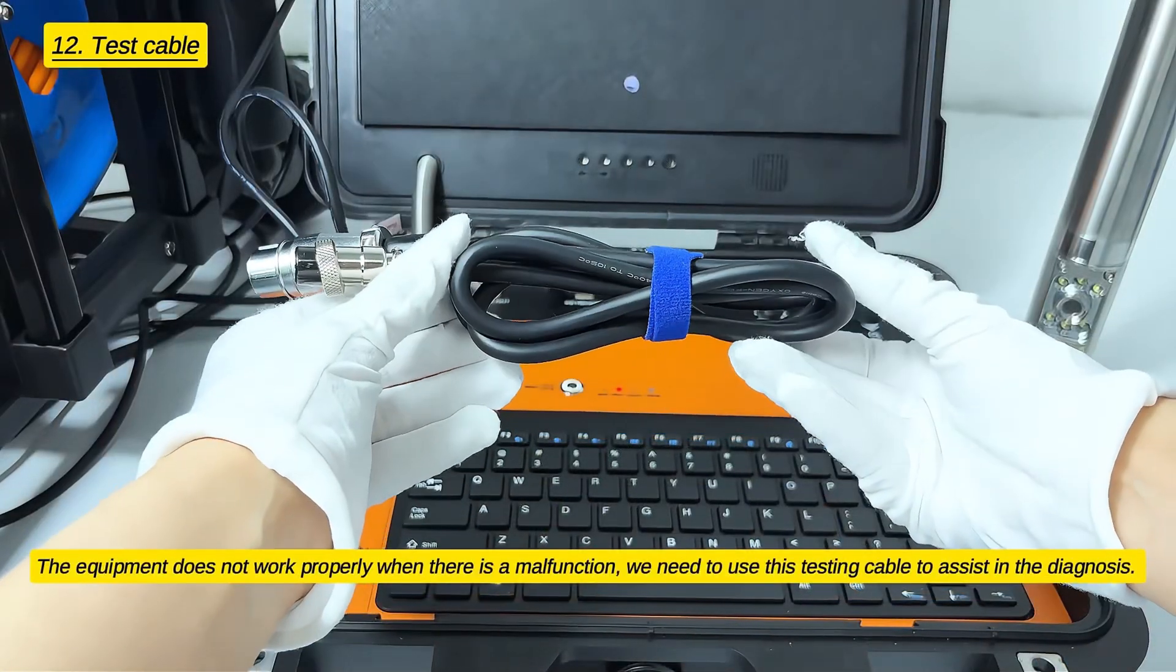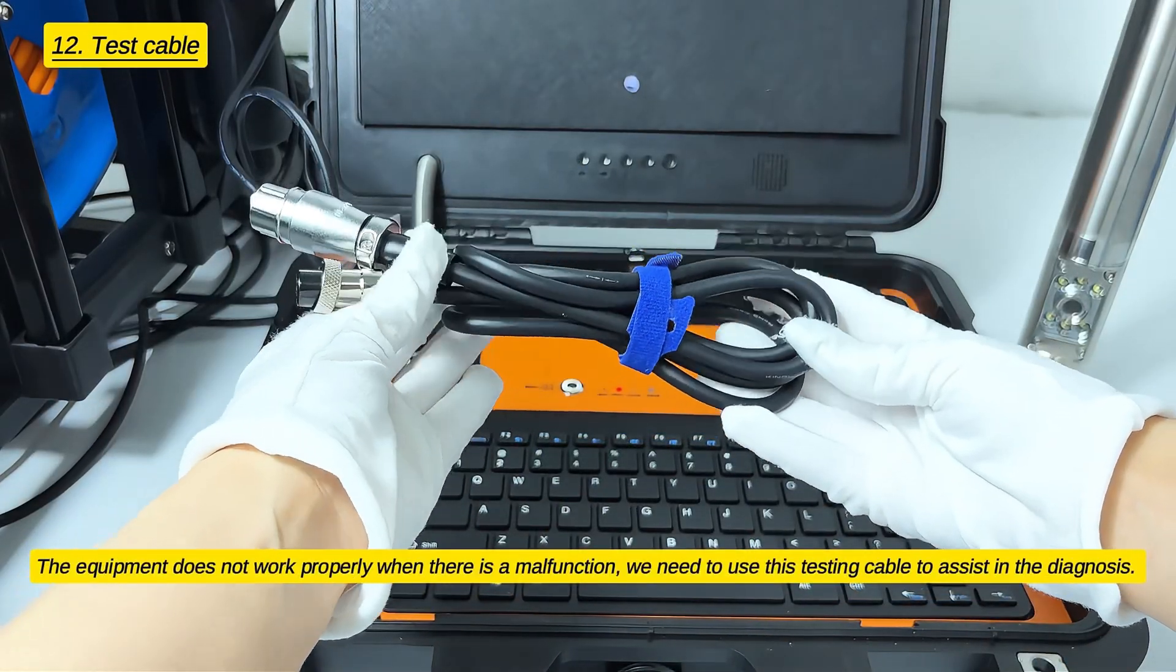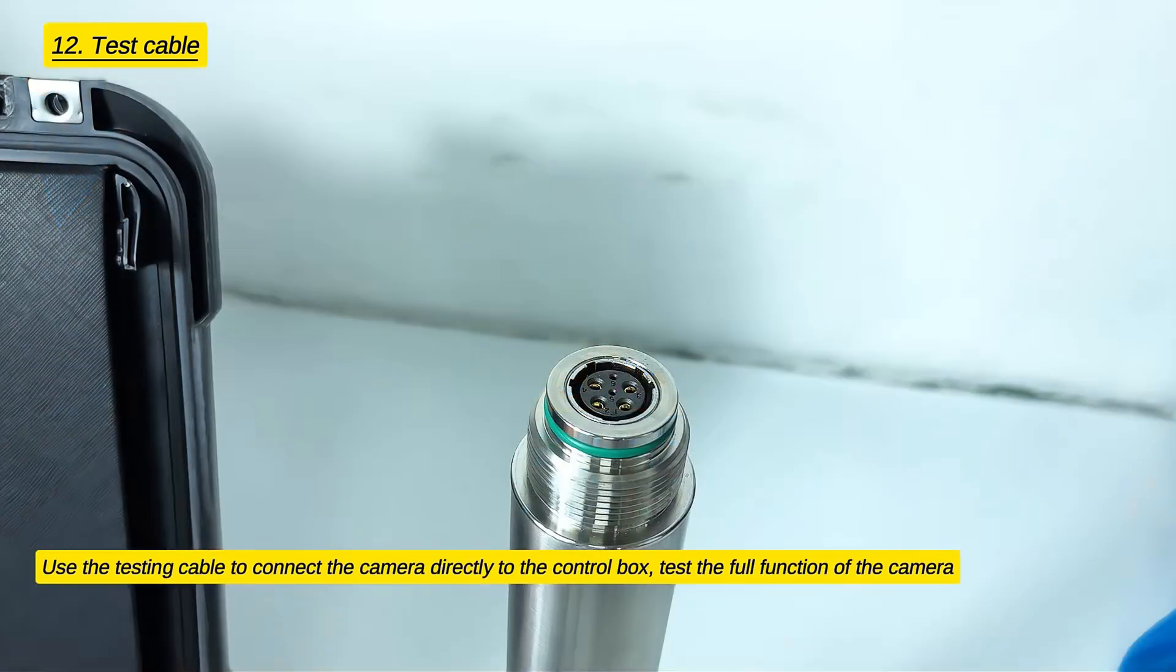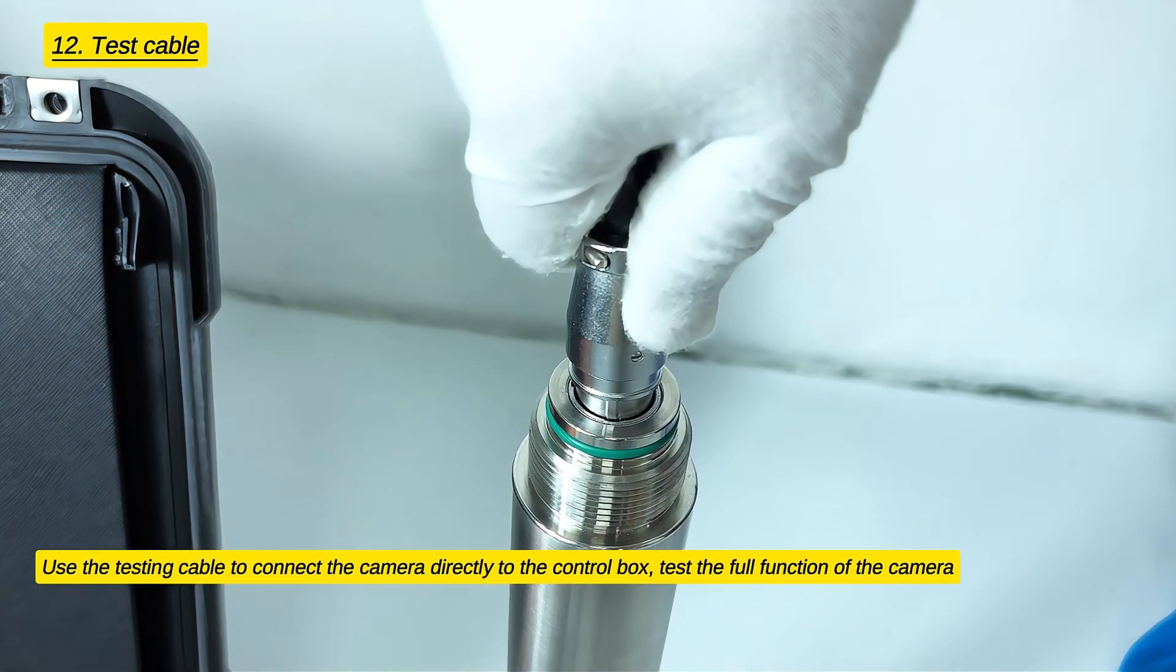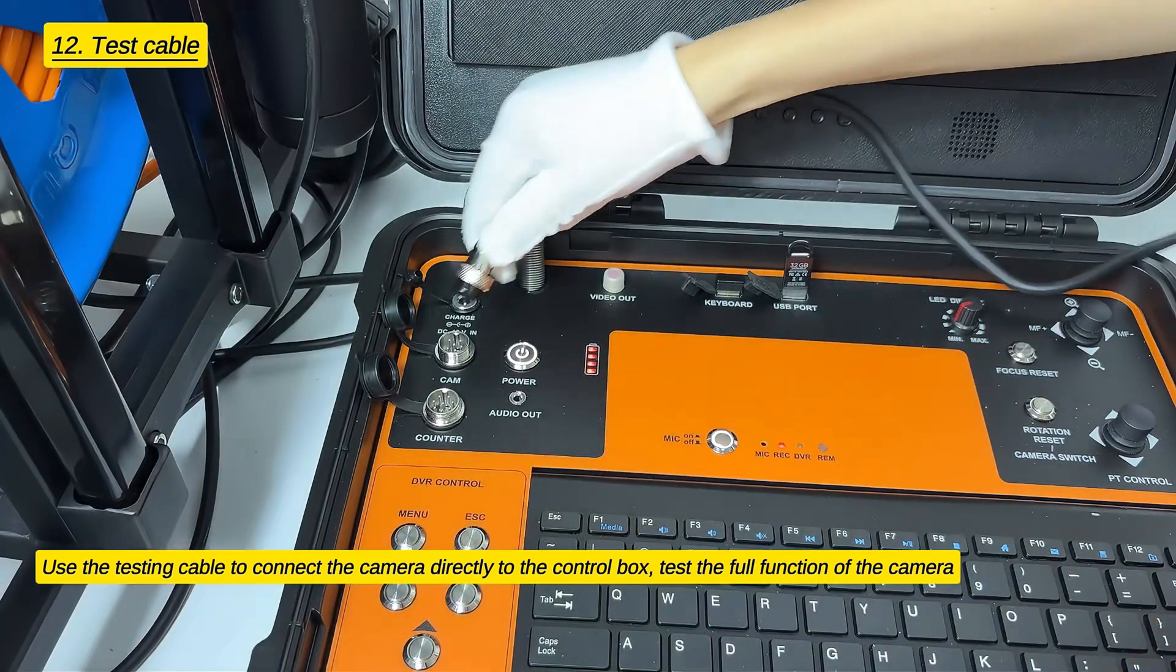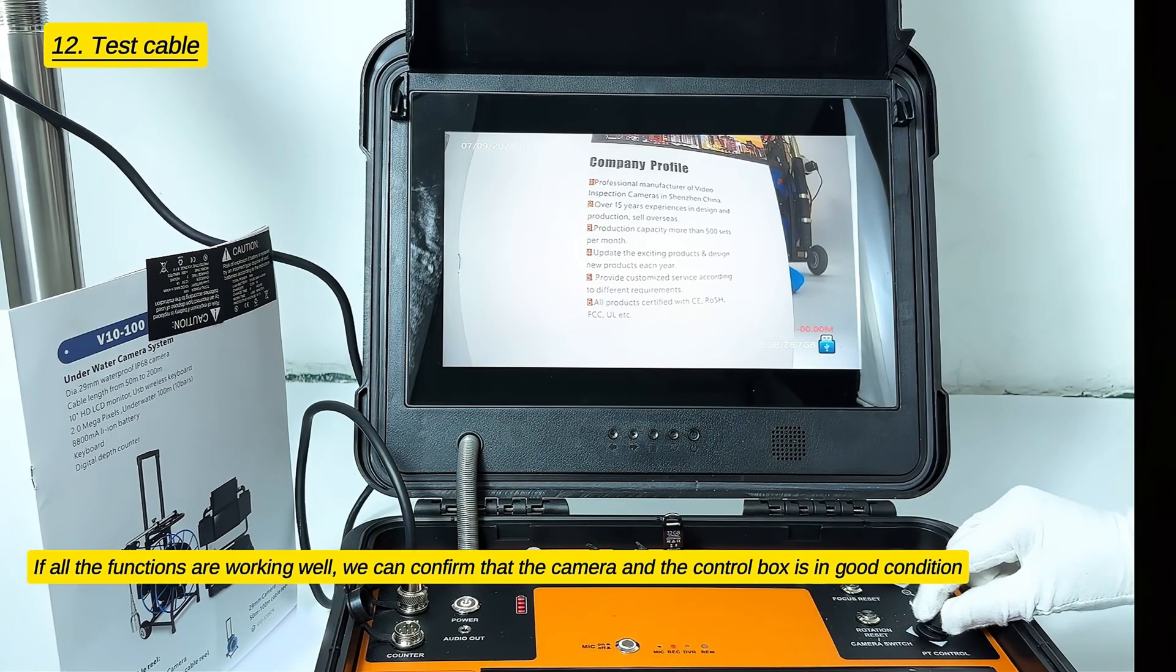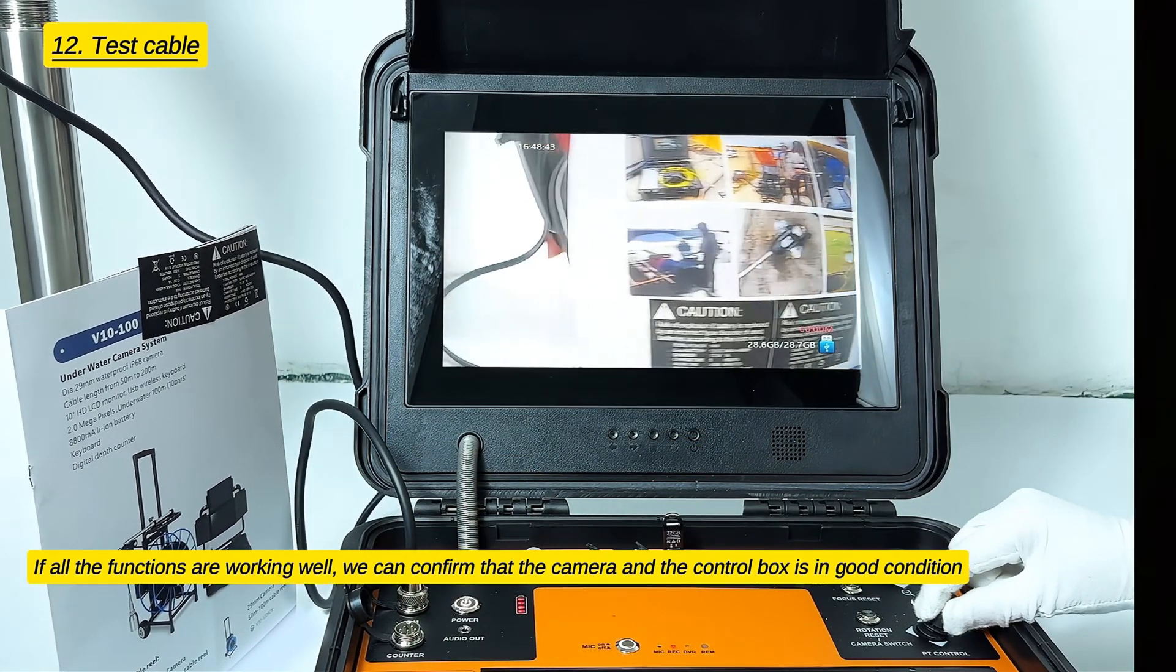The equipment does not work properly when there is a malfunction. We need to use this testing cable to assist in the diagnosis. Use the testing cable to connect the camera directly to the control box. Test the full function of the camera. If all functions are working well, we can confirm that the camera and control box are in good condition.